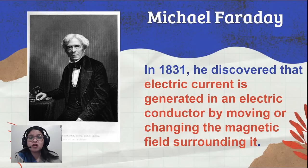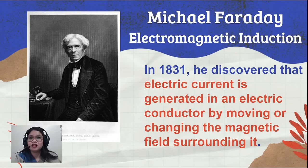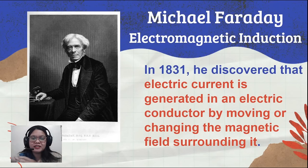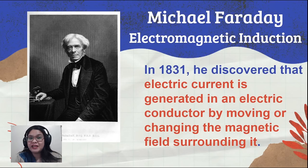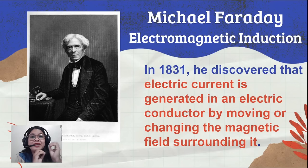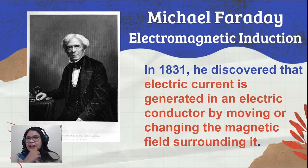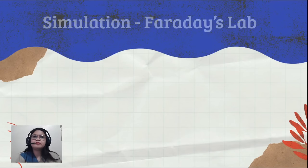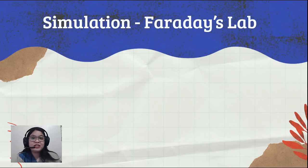This concept is what we call electromagnetic induction. To emphasize: what Hans Christian Orsted discovered is electromagnetism — electricity can produce magnetism. Michael Faraday discovered electromagnetic induction — magnetism can produce electricity. They discovered the reverse of each other. Right now, we will be trying to simulate what Faraday discovered.